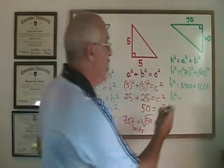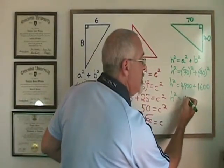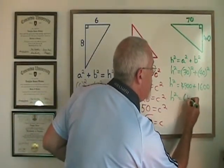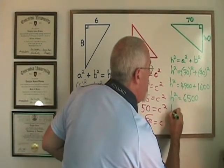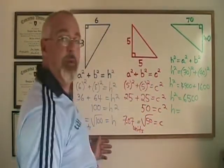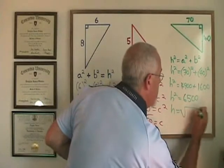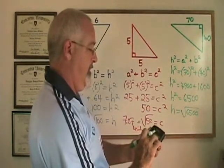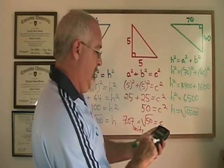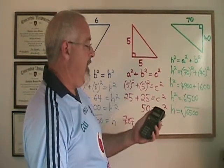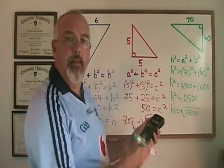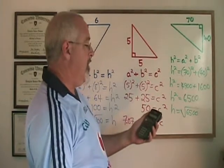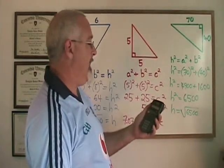Therefore, h² is equal to the total of 4,900 and 1,600, which is 6,500. h, my hypotenuse, is therefore equal to the square root of 6,500, which is 80.6225. And again, the decimal continues onwards. I'm going to round off to the nearest hundredth, so it is 80.62.